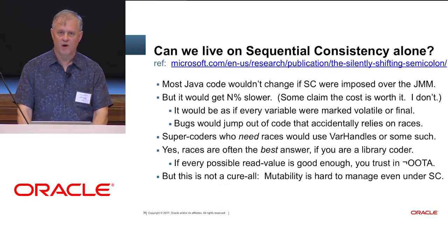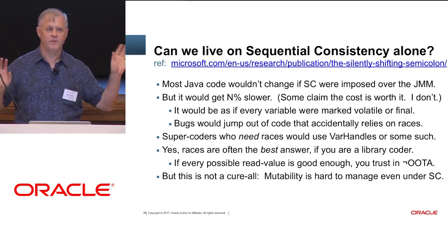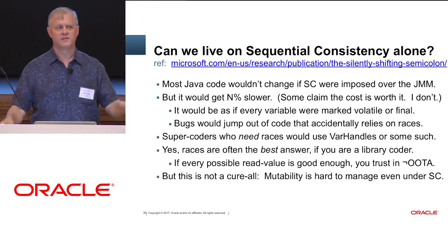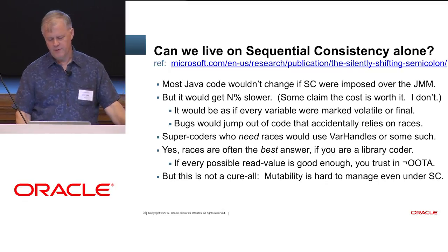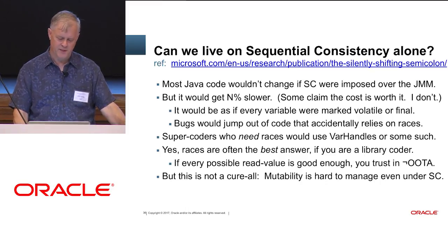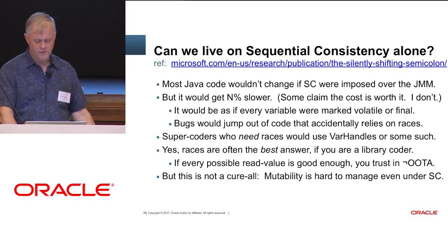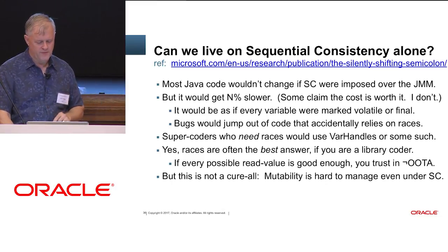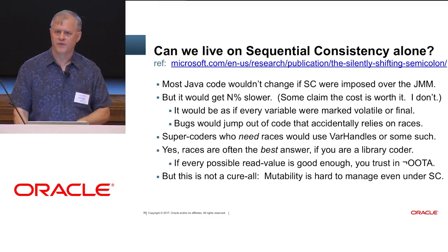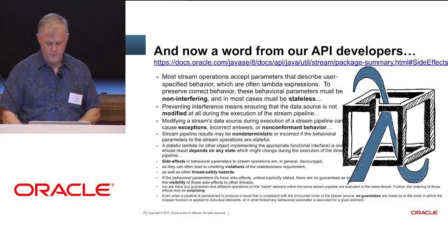We could impose sequential consistency all the time, thereby removing races by fiat. It's debatable how slow this would get. There's a silently shifting semicolon paper claiming we should really do this, and it's a Java-like thing to do — just say no more races and figure out how to optimize it anyway. But I think the cost would be enough to make people go to C++ instead, and that would be sad for me. People who need races could use var handles. It's really hard to manage mutability even under sequential consistency, which is the grand prize of the Java memory model.